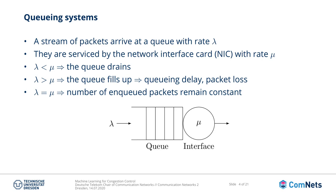It is important to understand that this packet loss is different from random packet loss caused by bit errors or something like that — this is packet loss caused by congestion. We also have the last scenario where the two rates match exactly, and in this scenario the number of enqueued packets remains constant in the system.